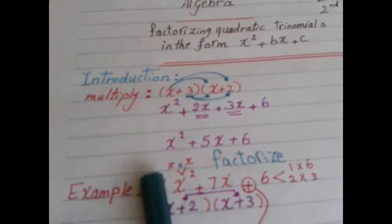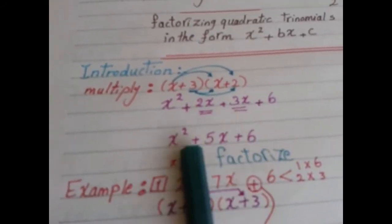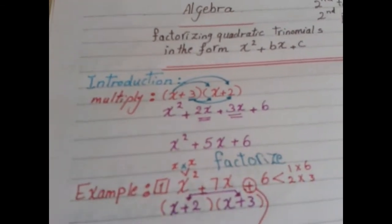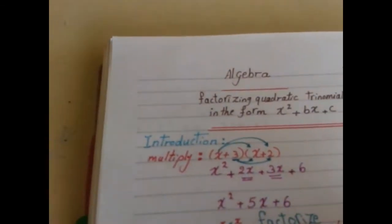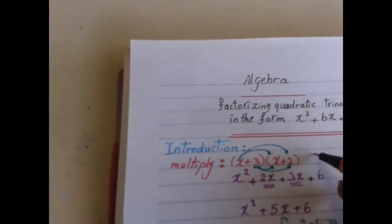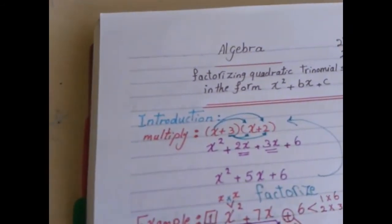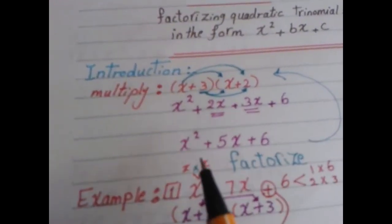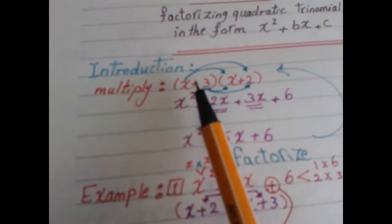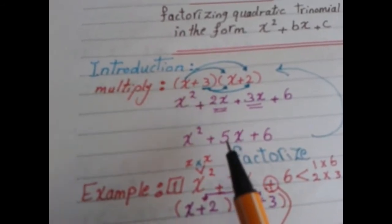The lesson today: I will give you a trinomial in that form and ask you to find the two brackets — that is, the factors of the trinomial. So given the expanded form, you bring back the two brackets.